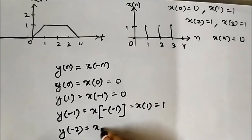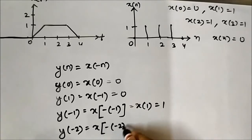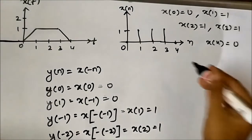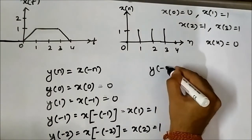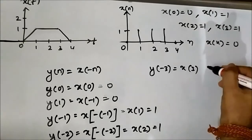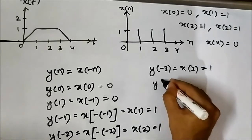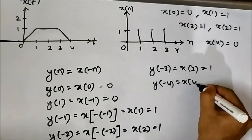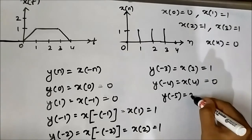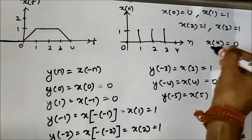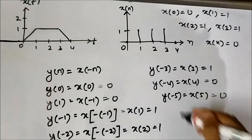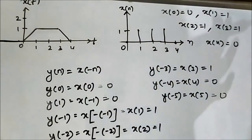Similarly, y[-2] is equal to x[-(-2)] = x[2], which is equal to 1. y[-3] is equal to x[-(-3)] = x[3], which is equal to 1. y[-4] is equal to x[4], which is equal to 0. y[-5] will be x[5], which has not been defined, so it is 0. We do not need to go any further in the negative direction — all values will be 0.